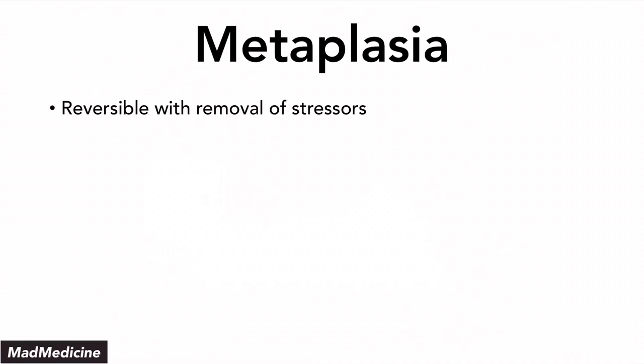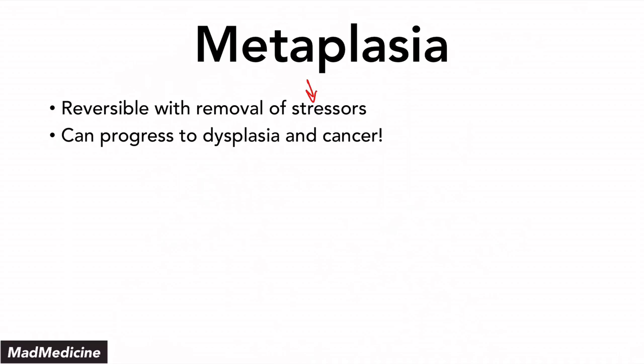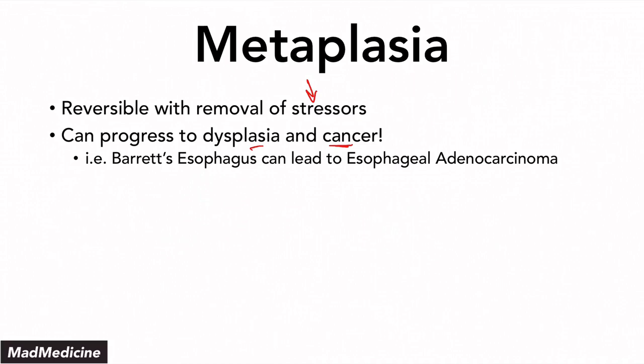Metaplasia, even though it's an abnormal process, can be reversed with removal of the stressor placed upon the tissue. If you remove the stressor, you will end up reversing metaplasia. However, if you don't remove the stressor, you can progress into dysplasia and eventually into cancer. With Barrett's esophagus, if untreated, it can progress to esophageal adenocarcinoma.